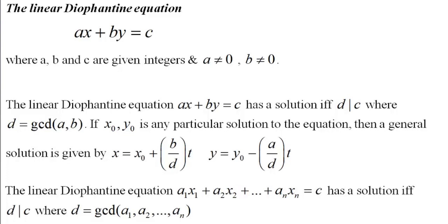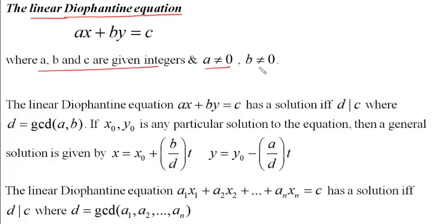Today we will study the linear Diophantine equation. Any equation in one or more variables which is to be solved in integers is said to be a Diophantine equation. Diophantine equations may have any form and any number of variables. Here we are just going to talk about linear Diophantine equations, the simplest of which is ax plus by equals c, where a, b, and c are given integers with a ≠ 0 and b ≠ 0, and we have to find integral solutions of x and y.